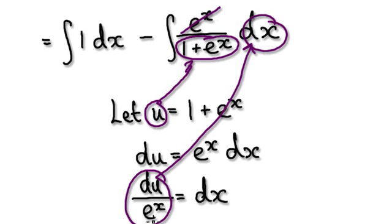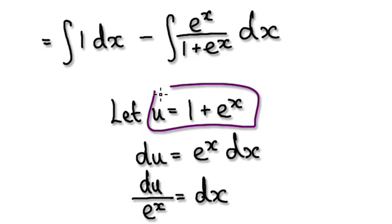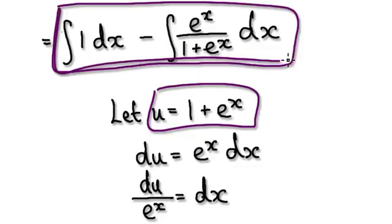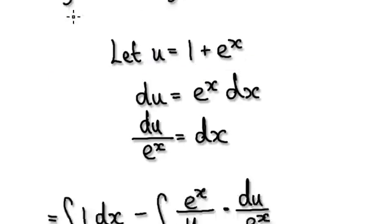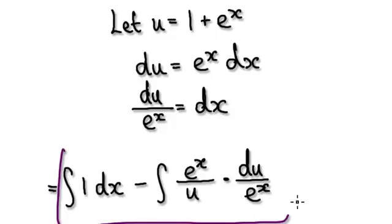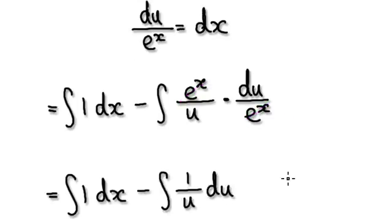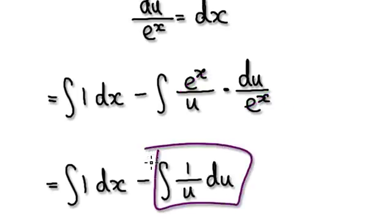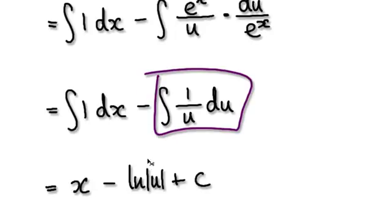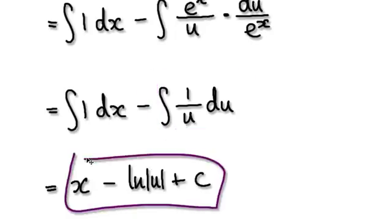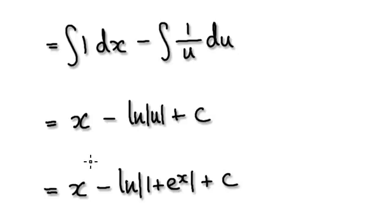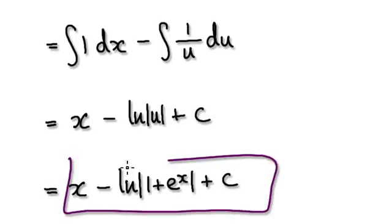Later on this will cancel out with this. Let u equal this — now substitute back in. This thing here will now equal this, and these two will cancel out, giving us this. That's quite straightforward by now, so that takes us to here. Substitute u back in — that gives you this. So this is your final answer.